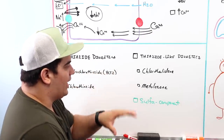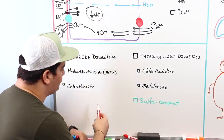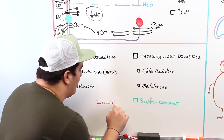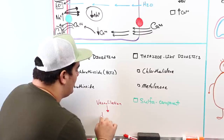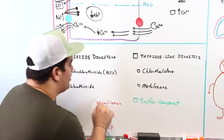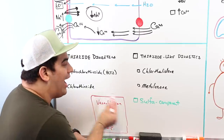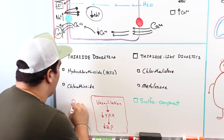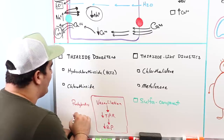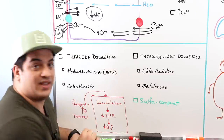One additional mechanism proposed for thiazide and thiazide-like diuretics is the promotion of vasodilation. The exact physiology isn't fully understood, but vasodilation decreases total peripheral resistance, thereby decreasing blood pressure. It's thought that thiazides may stimulate prostaglandin production, and those prostaglandins help promote vasodilation.